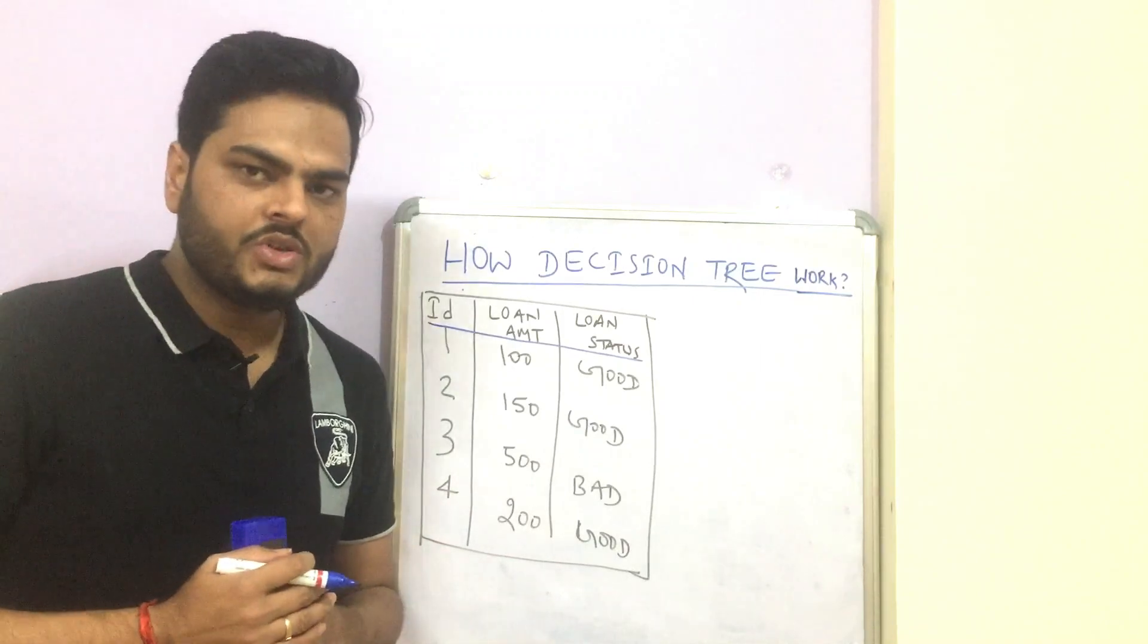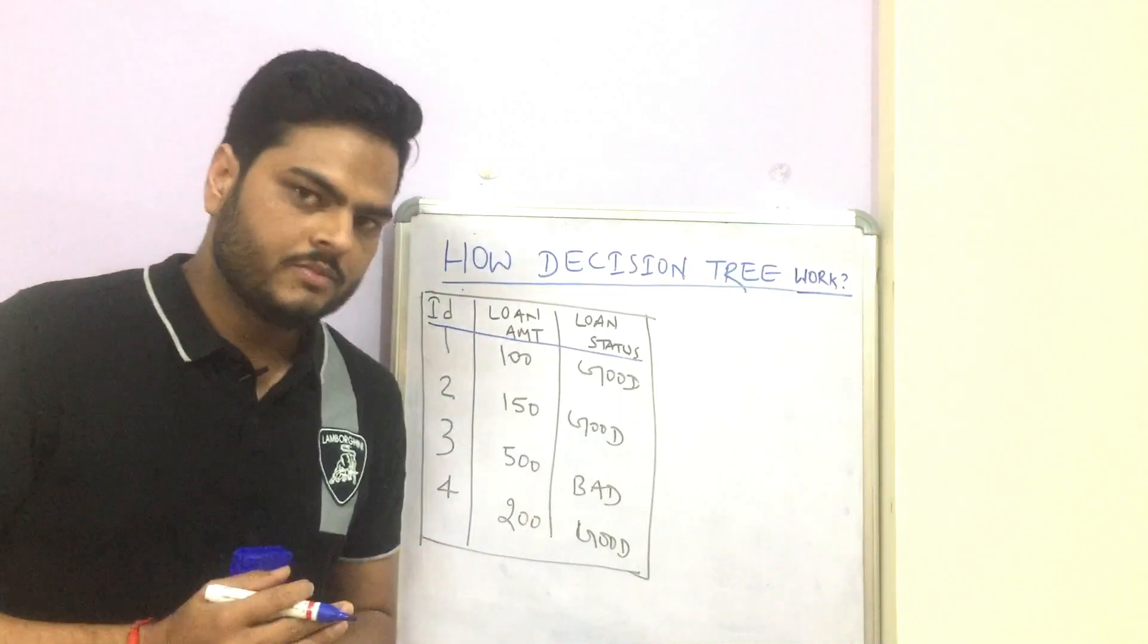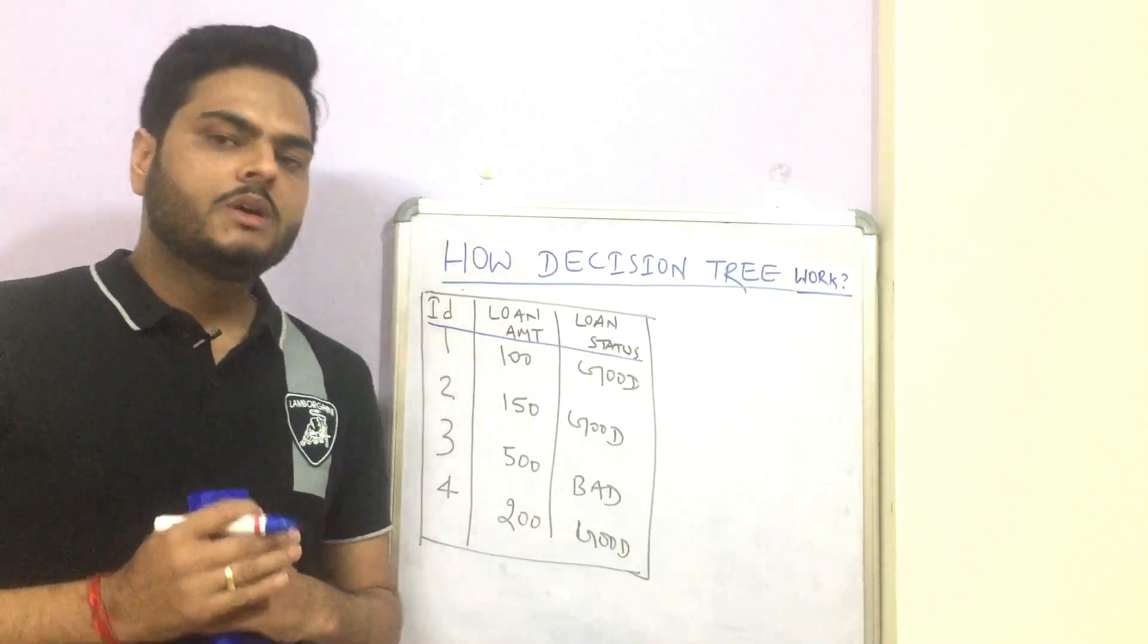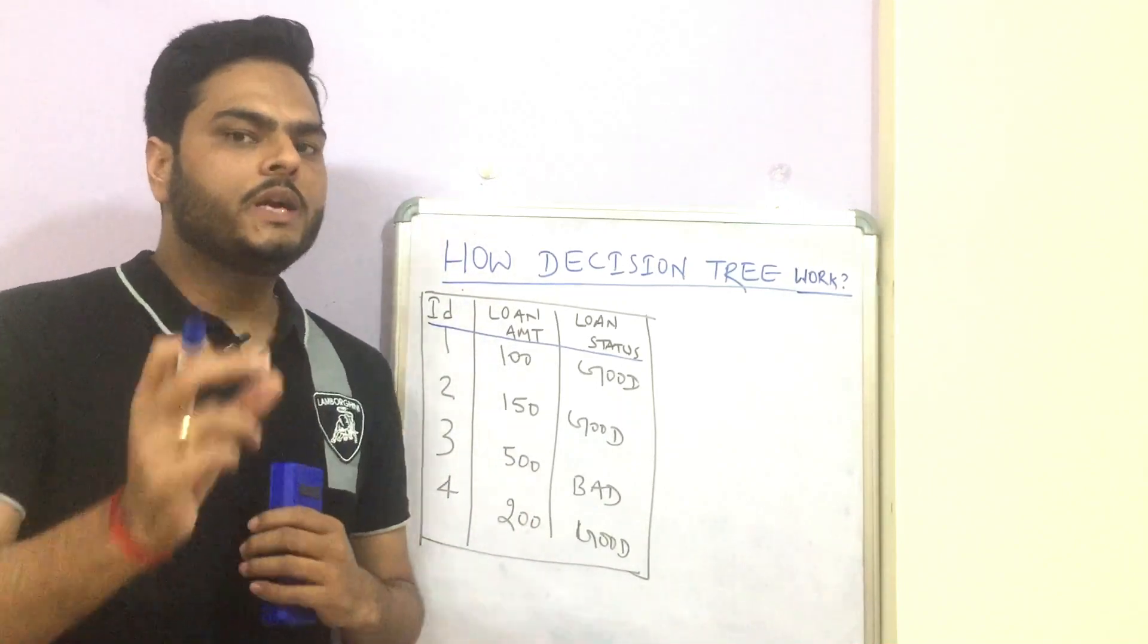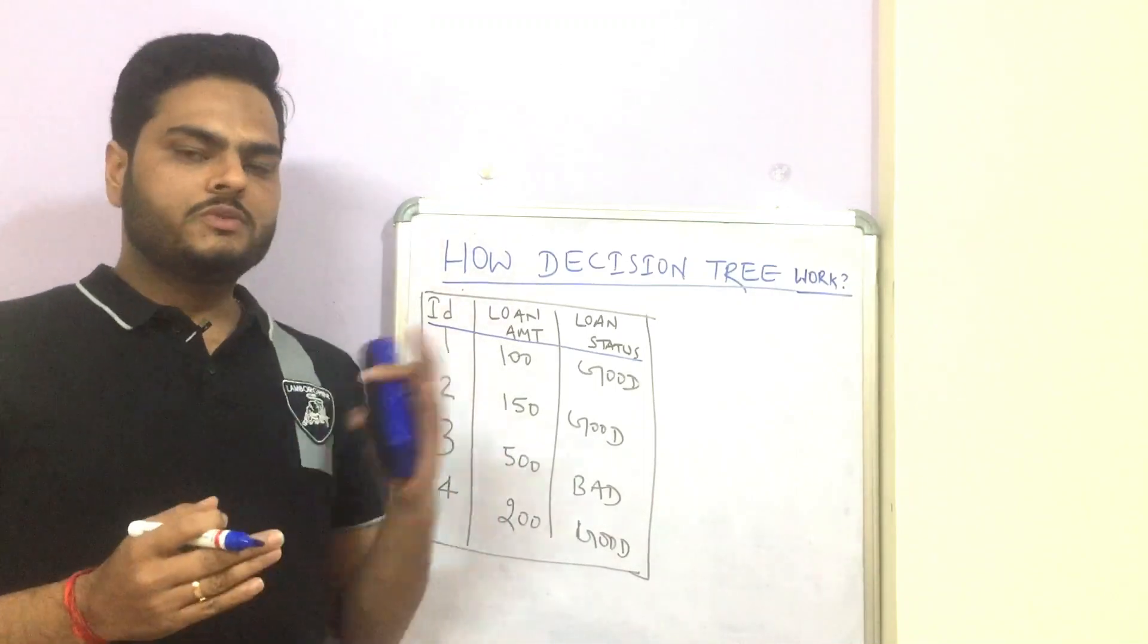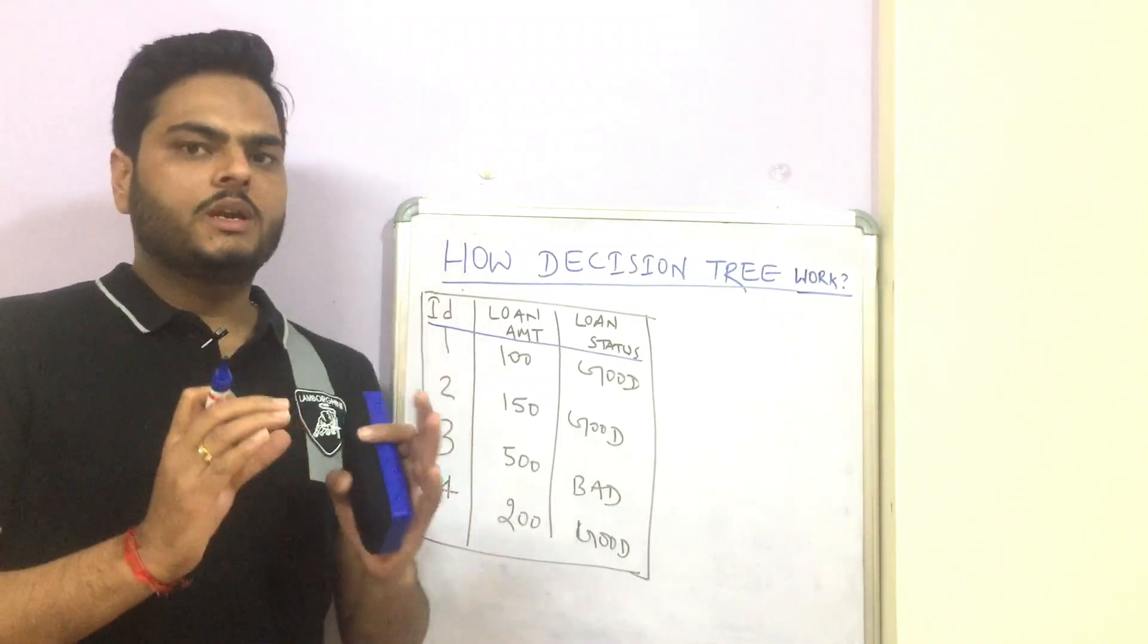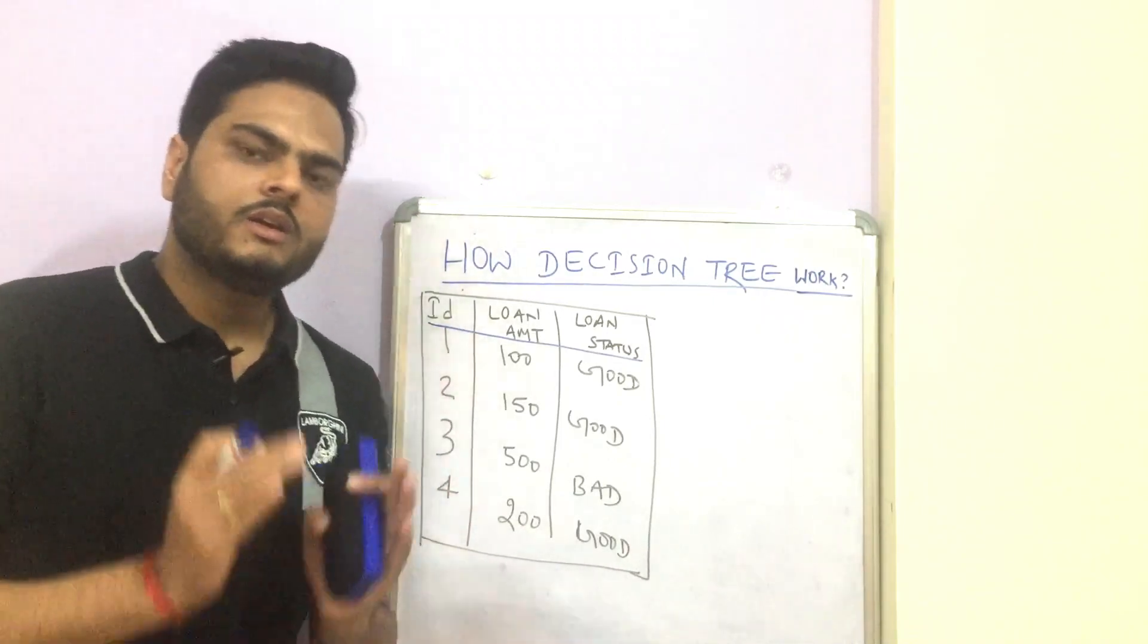So first of all, what is decision tree? Decision tree is nothing but a machine learning algorithm. What is a machine learning algorithm? A machine learning algorithm is a way in which machine learns the pattern from the data. You can see this video coming as suggestion and you will be very clear on what is machine learning and what is pattern learning from the data.